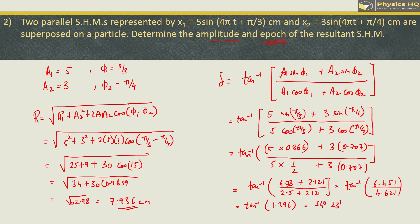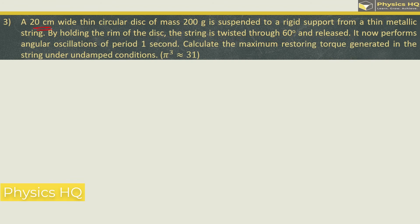A 20 centimeter wide thin circular disc, which is the diameter, so radius will be 10 centimeter or you can write it as 0.1 meter, of mass 200 grams so mass is 0.2 kg is suspended to a rigid support from a thin metallic string. By holding the rim of the disc the string is twisted through 60 degrees and released.